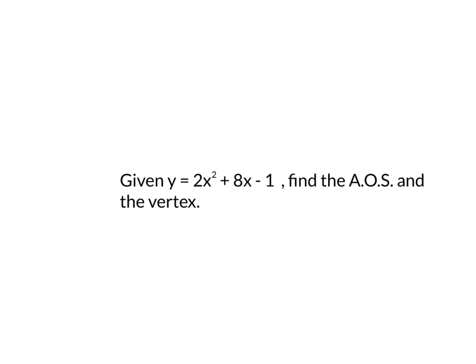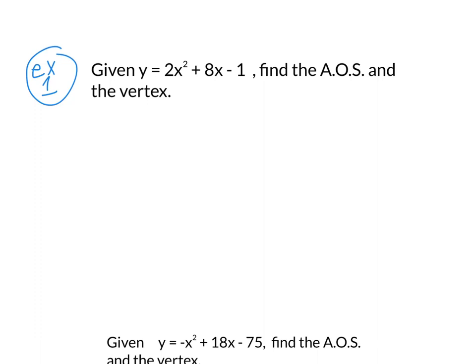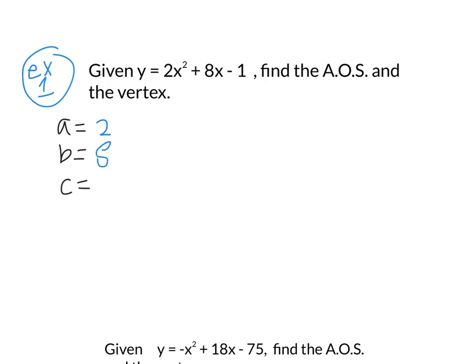We have our first example over here. So, let's put that as example 1. Given y is equal to 2x squared plus 8x minus 1, I want you to find the axis of symmetry and the vertex. So, how would you do that? Well, the first thing that you want to do is to identify the a, b, and c. And if you remember from the standard form, we have ax squared plus bx plus c. So, you have your a, b, c. These are the numbers. You can just write them down. So, a is positive 2. B is positive 8. C is negative 1.